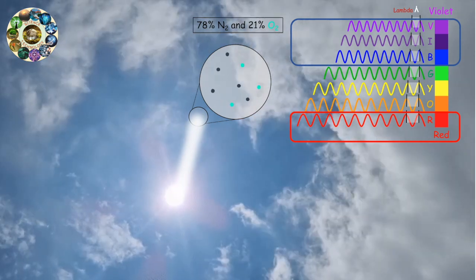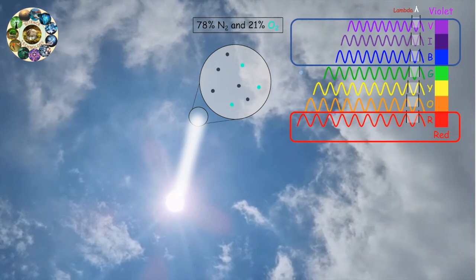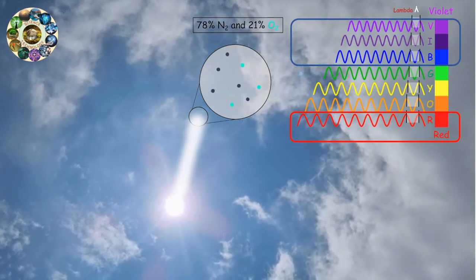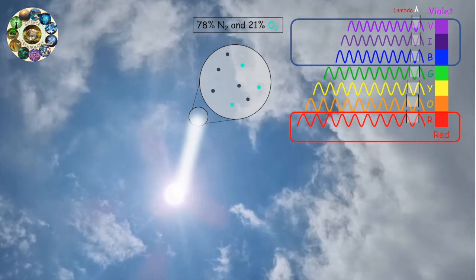These molecules can scatter light of all wavelengths, but preferentially are more efficient at scattering bluer, shorter wavelength light.